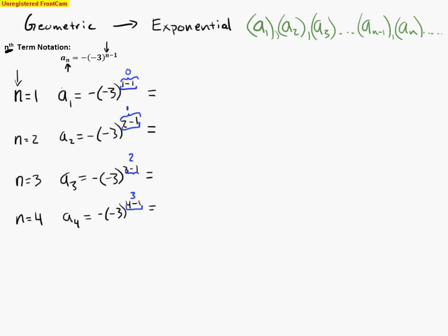So now, basically, I have a bunch of exponents. I have negative, negative 3 to the 0. Negative 3 to the 0. Well, I know anything to the 0 is just 1. So now I have negative 1.